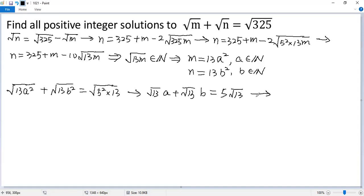Both sides divided by square root of 13. So we get a plus b equals 5. But we know a, b are natural numbers.